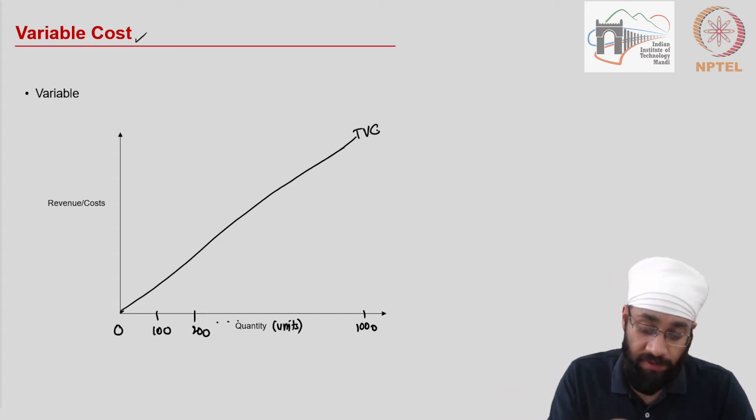Now here we are assuming a linear variable cost because we are assuming the per unit cost is going to stay the same. Actually, there are discussions in economics where we say the cost curve actually slopes and so on, but we are going to keep this simple.